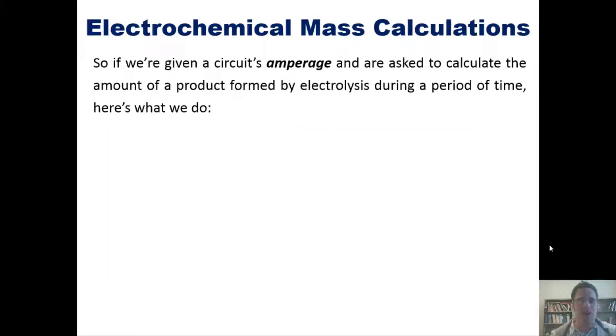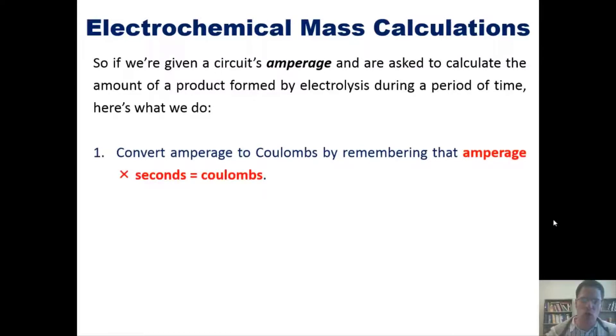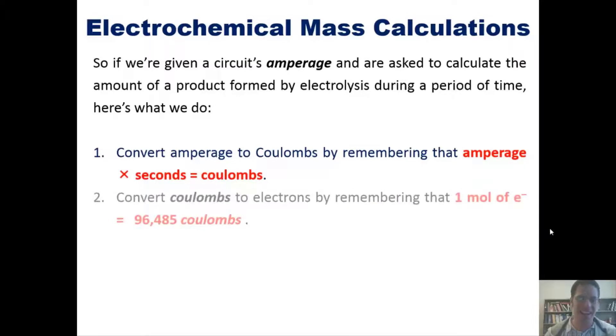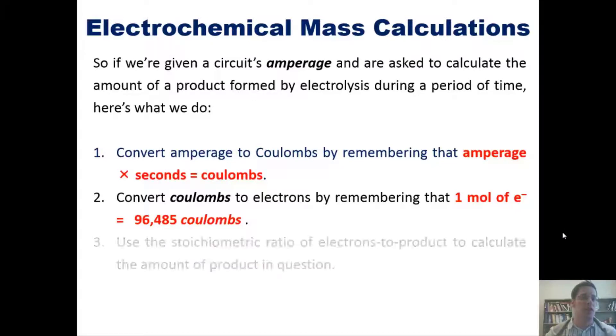So if we're given a circuit's amperage and we're asked to calculate the amount of a product formed by electrolysis during a period of time, here's what you have to do. First, convert amperage to coulombs by remembering that amperage times seconds equals coulombs. Second, convert coulombs to electrons by remembering that one mole of electrons equals 96,485 coulombs. And third, use the stoichiometric ratio of electrons to products to calculate the amount of product in question. Are you totally confused?